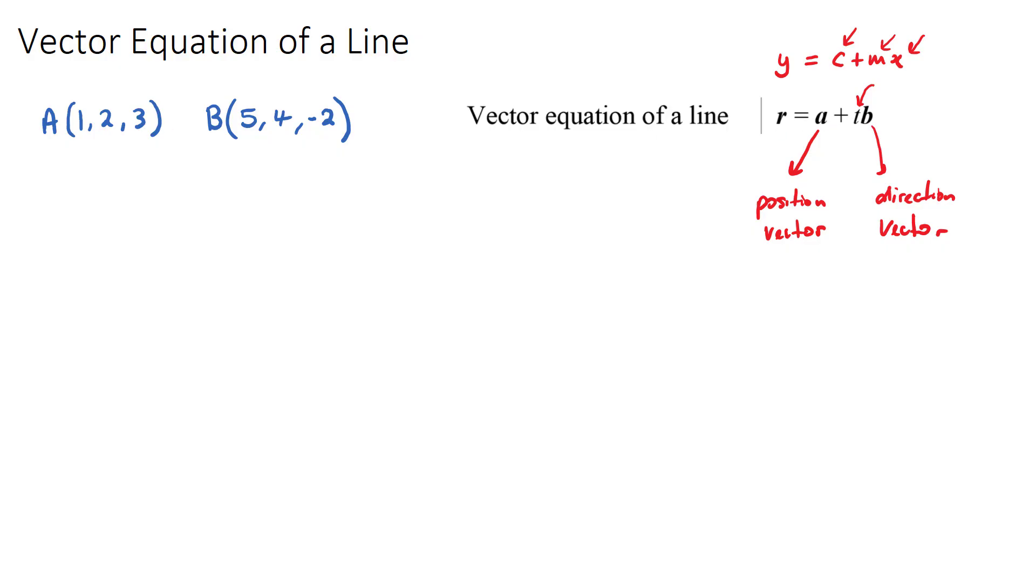So these coordinates, they actually can also be written in position vector form. So the position vector of OA just means the journey that we had to go through to go from the origin, which is 0, 0, 0, to point A, and that would just be 1, 2, 3. We know we can turn a coordinate into a position vector quite easily, just by making it a vector form. So OB would be 5, 4, negative 2.